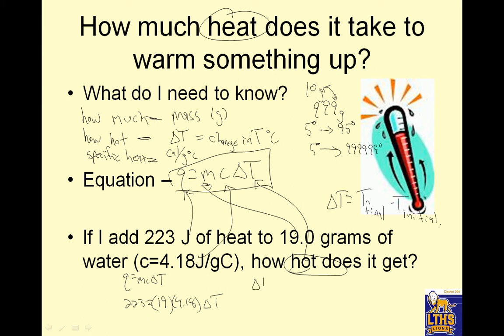So when I rearrange for delta T, and I'm going to move these guys to the bottom, delta T equals 223 over 19 and over 4.18. That's 19. Sorry about the bad handwriting. So ask my calculator. 223 divided by 19 divided by 4.18. And my change in temperature is 2.81 degrees Celsius. That's it.